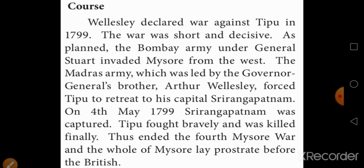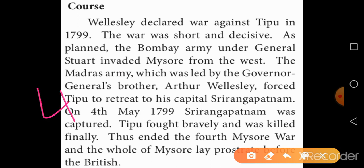Arthur Wellesley was the brother of Governor General Lord Wellesley. Without another option, Tipu Sultan retreated to his capital, Srirangapatna, which is located near the city of Mysore. The British captured the island fortress at Srirangapatna on the 4th of May 1799.